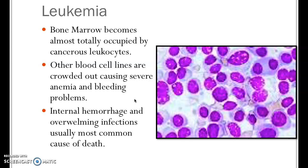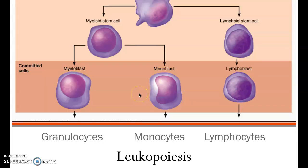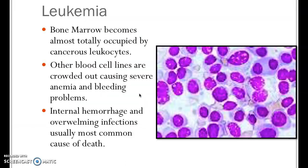Acute leukemias are more aggressive than chronic ones. Acute leukemias involve mutations higher up on the hematopoietic lineage, while chronic leukemias occur further down where cells have slightly more function — though still not to the extent of a healthy cell. Under a microscope, what you'd expect to see with leukemia is a large number of non-specialized white blood cells everywhere, crowding out red blood cells and platelets.